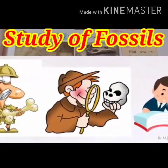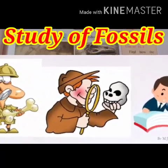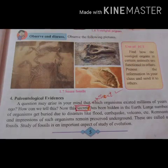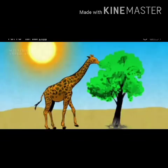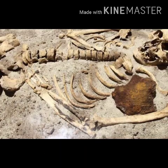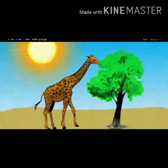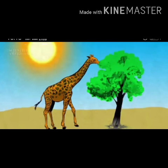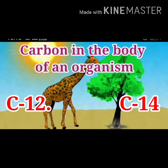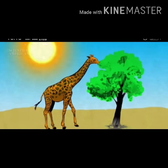The study of fossils is an important aspect of the study of evolution. If we want to study evolution, studying fossils is very important. If we find any fossil, how can we determine the age of the organism? All of us know that each and every organism consumes carbon throughout their life. Carbon exists inside the body of an organism in two different forms: C12 and C14.